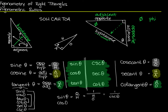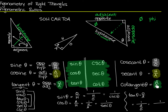The cosine of theta is adjacent over hypotenuse, which I can think of as one over hypotenuse over adjacent — and hypotenuse over adjacent is secant, so cosine equals one over secant theta. And if I have tangent of theta as opposite over adjacent, that's one over adjacent over opposite, which is cotangent. So sine equals one over cosecant, cosine equals one over secant, and tangent equals one over cotangent.